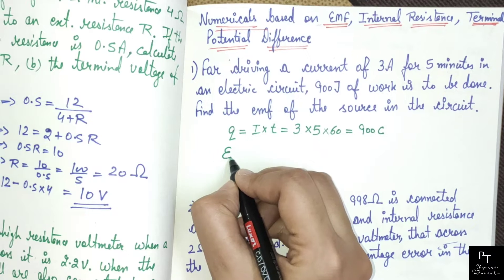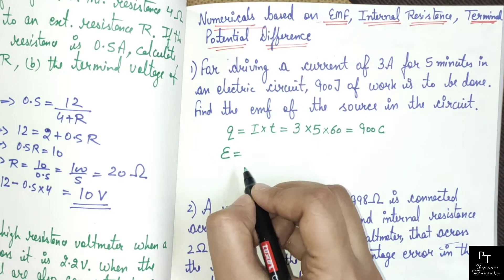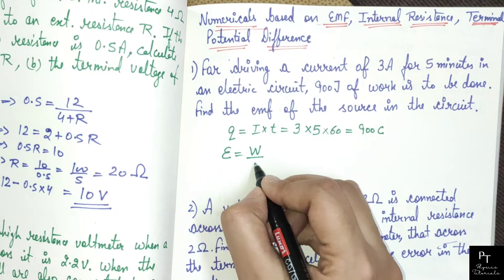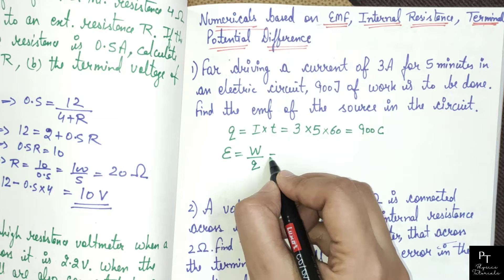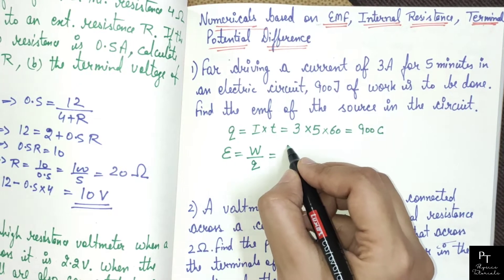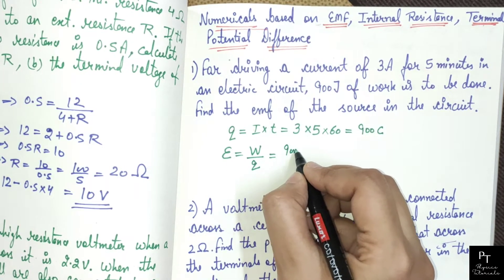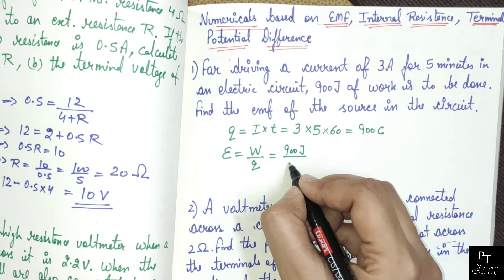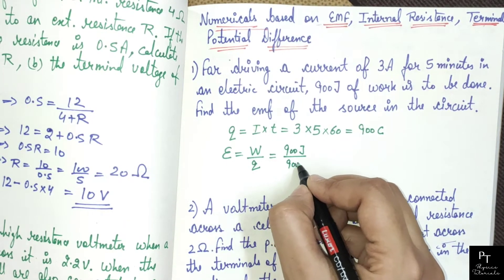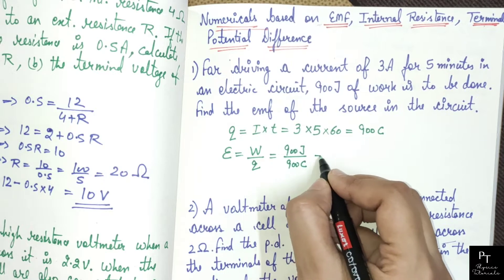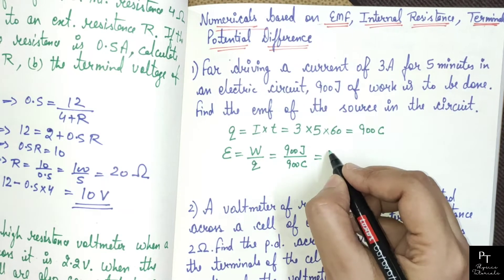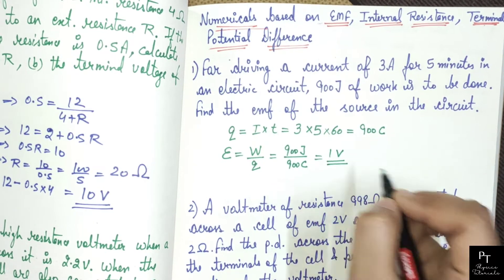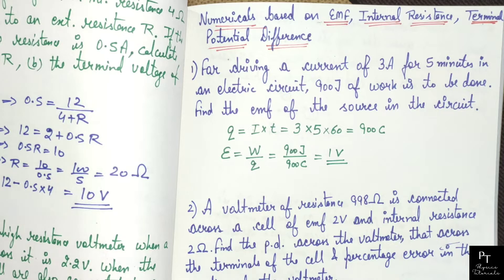Now we have to find EMF. EMF is work done per unit charge. Work done is 900 joules and charge is 900 coulombs. So EMF equals to 1 volt.